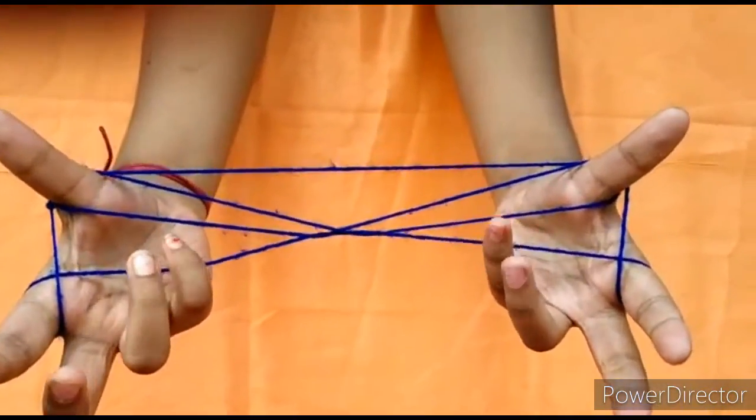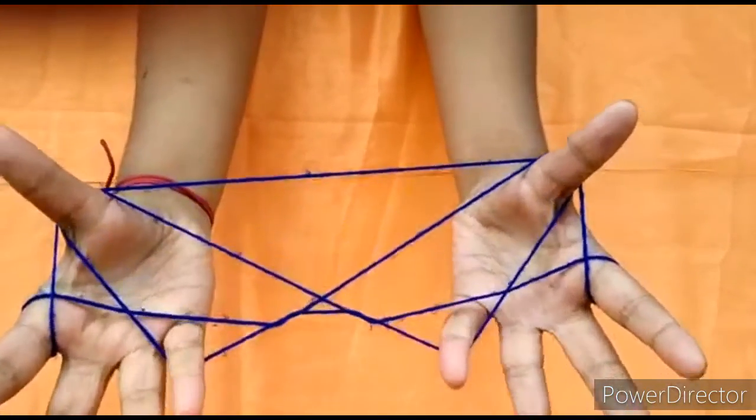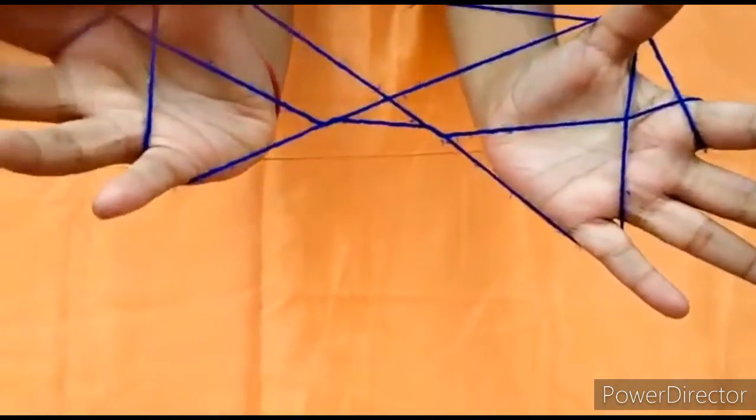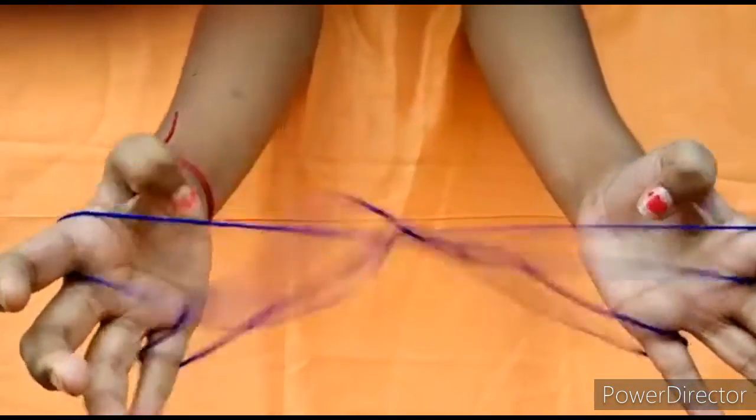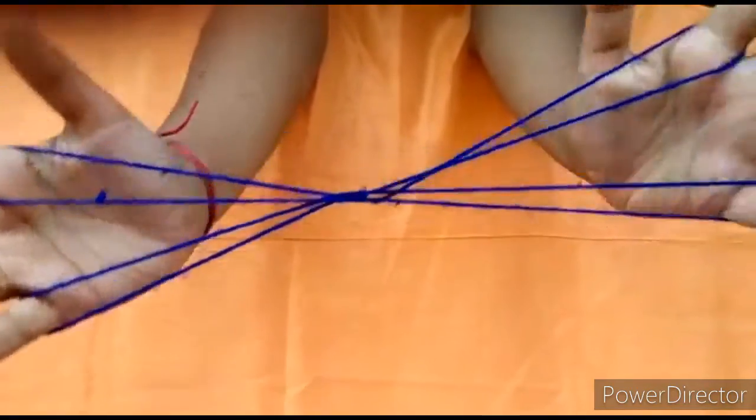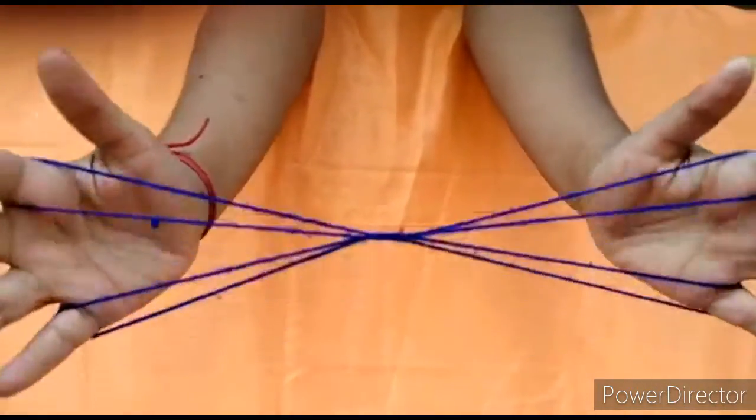Now come up and take the second string with your pinky fingers. Slowly take out your index finger. And this is called cat's cradle. Meow.